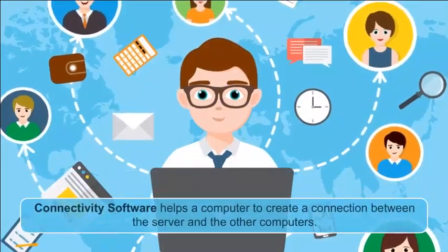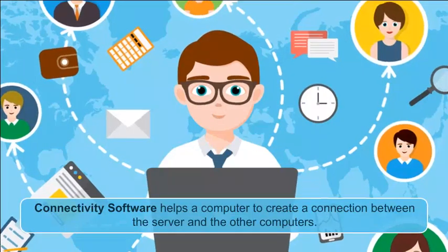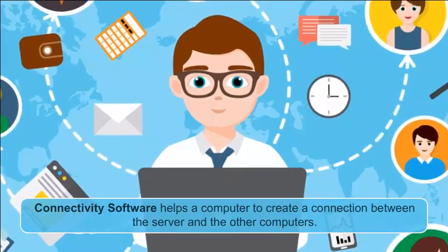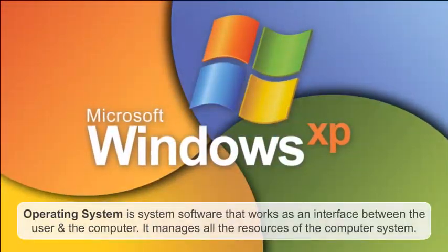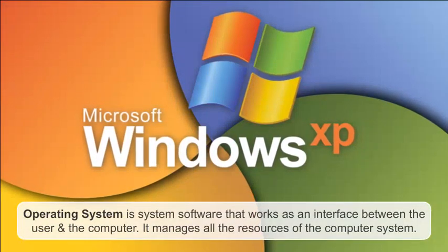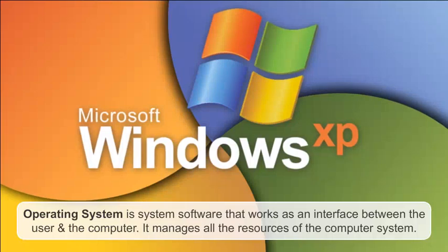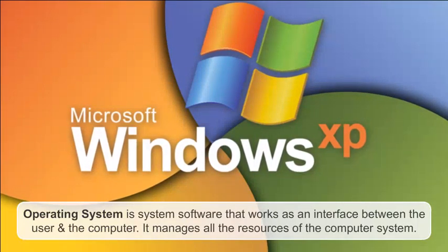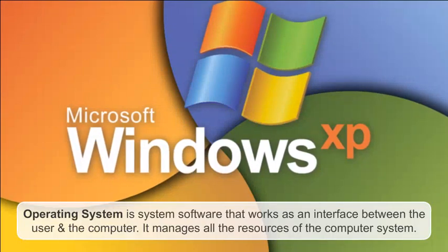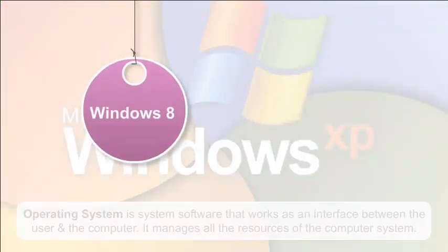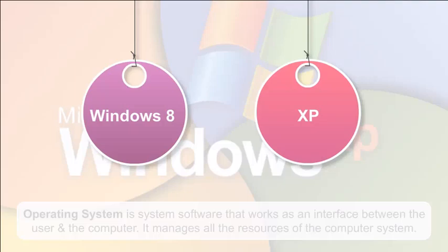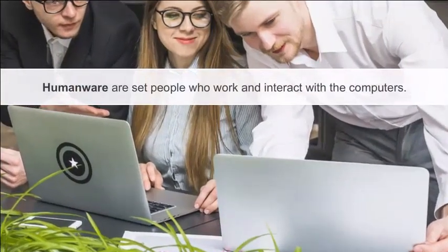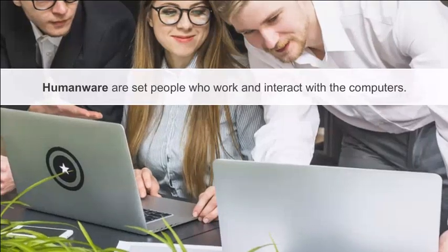Connectivity software helps a computer create a connection between the server and other computers. The Operating System is a system software that works as an interface between the user and the computer — it manages all the resources of the computer system, like Windows 8 and XP. Humanware refers to the set of people who work and interact with computers.